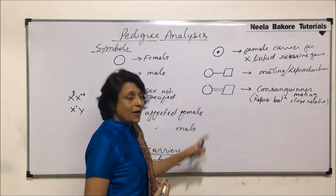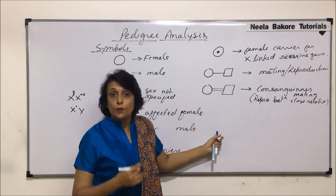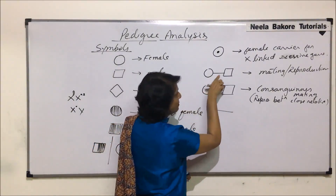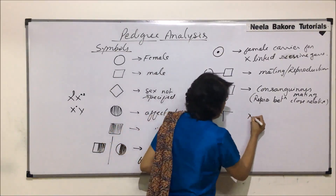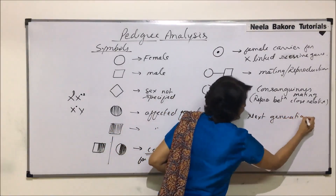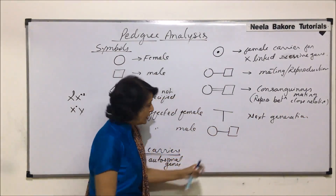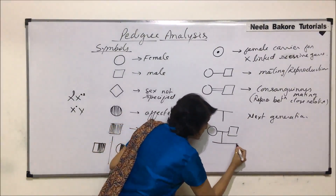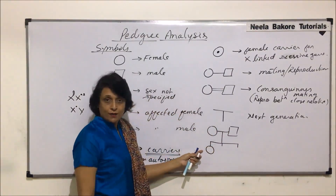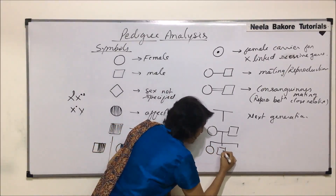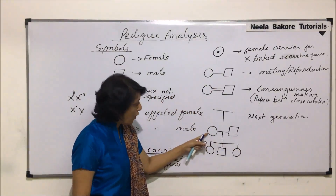If we want to represent the next generation — that is, the offsprings resulting from a mating — the horizontal mating line is connected by a vertical line going downward. This tells us the next generation. For example, suppose a couple has three children: the first is a daughter, so we use a circle; the second is a boy, so we use a square; and the third child is again a girl, represented by a circle. These are the offsprings of this marriage.